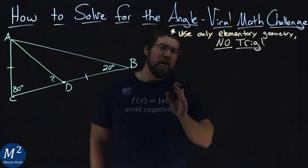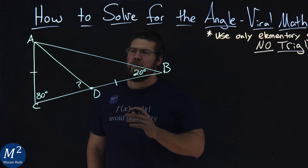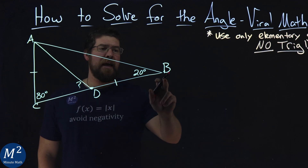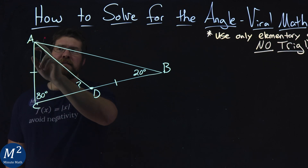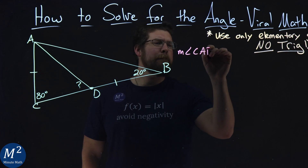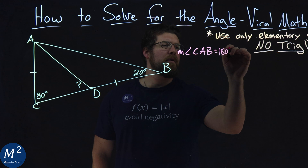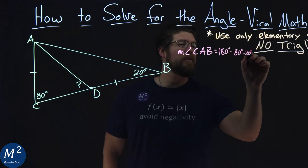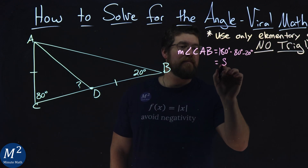All right, so now we're going to learn how to solve this problem. First thing I notice is we have 80 degrees and 20 degrees for angles C and B. Let's see if we can figure out angle CAB. The measurement of angle CAB equals 180 degrees minus 80 degrees minus 20 degrees, and that comes out to be 80 degrees.